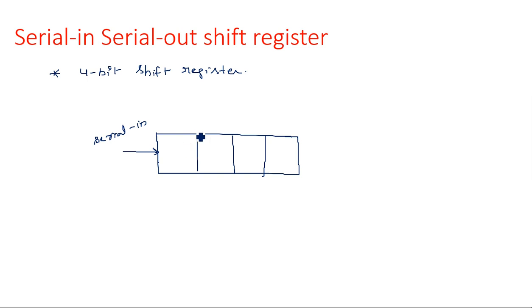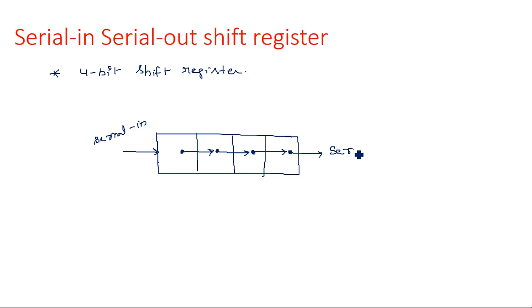The data keeps shifting in the right-side direction. The data in the first cell is moved to the next cell, and again that data is shifted to the next location, and then to the next. The data handled by the last flip-flop is sent out — this is the serial out. So serial-in serial-out means data enters serially and leaves the register serially. The shifting operation is performed for every clock pulse.